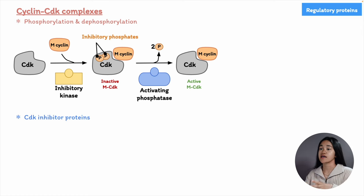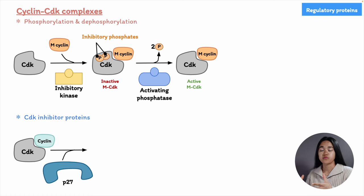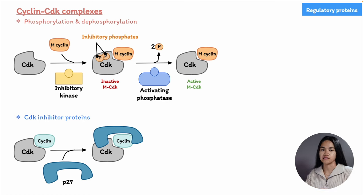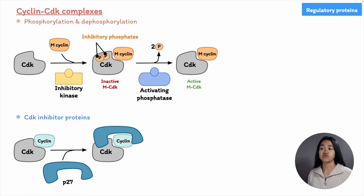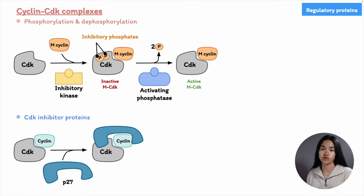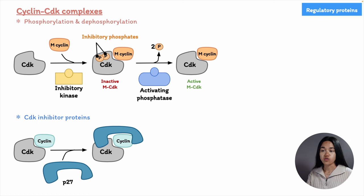Another way to regulate these complexes is by blocking CDK activity through the binding of CDK inhibitor proteins. These inhibitor proteins can block the formation or activity of certain cyclin-CDK complexes. For instance, some CDK inhibitor proteins help keep CDKs inactive throughout the G1 phase, delaying entry into the S phase. This allows the cell to continue to develop or wait until extracellular conditions are appropriate for division. The cell cycle control system can temporarily suspend the cycle's progression at various transition points to ensure important events only take place when the cell is completely prepared.